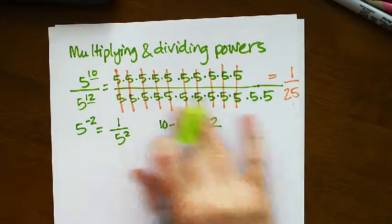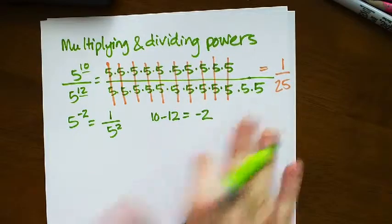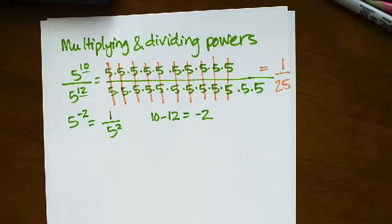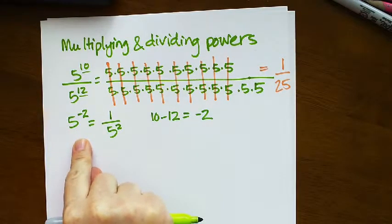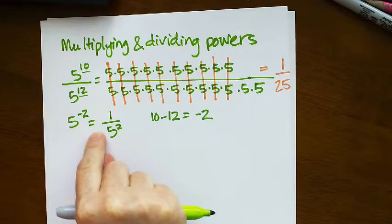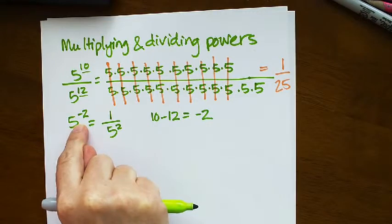Now, when I wrote it out, I didn't have any negative exponents because I just had the two 5s left over in the denominator, but you could always refer back to the exercise on negative exponents, or just look at my video explaining the negative exponents if you're confused on this part.